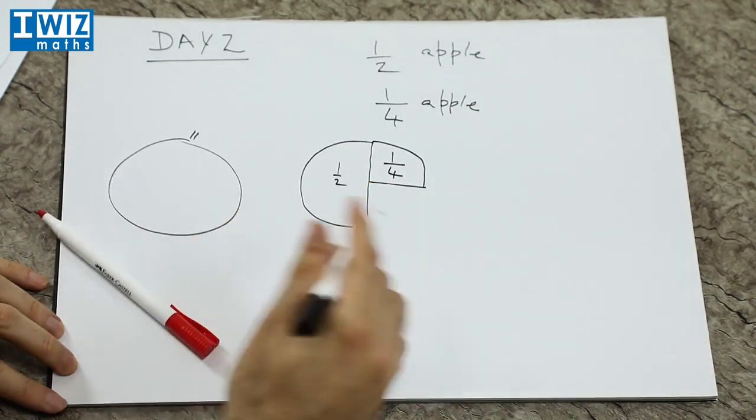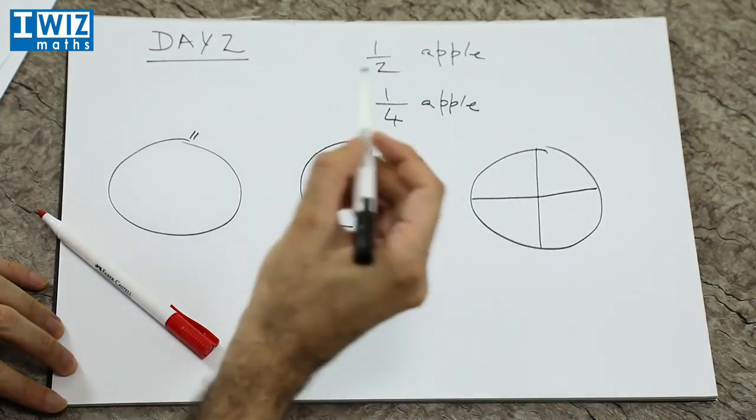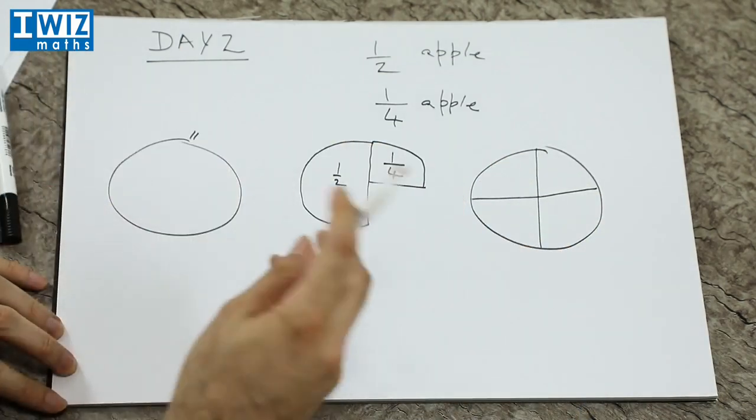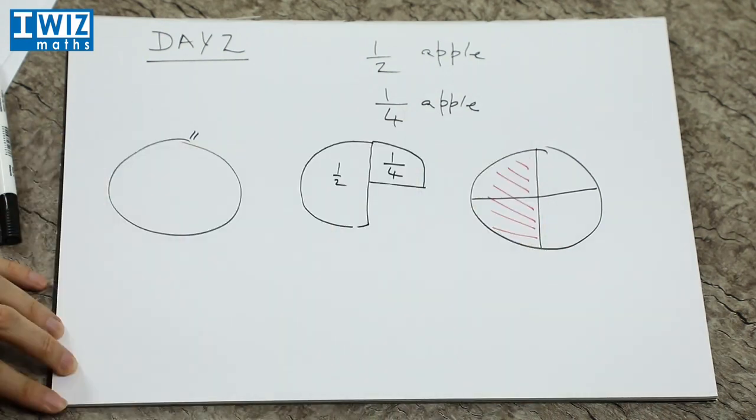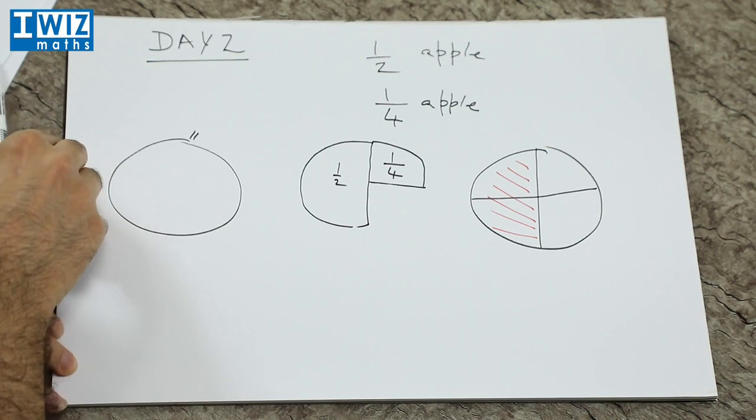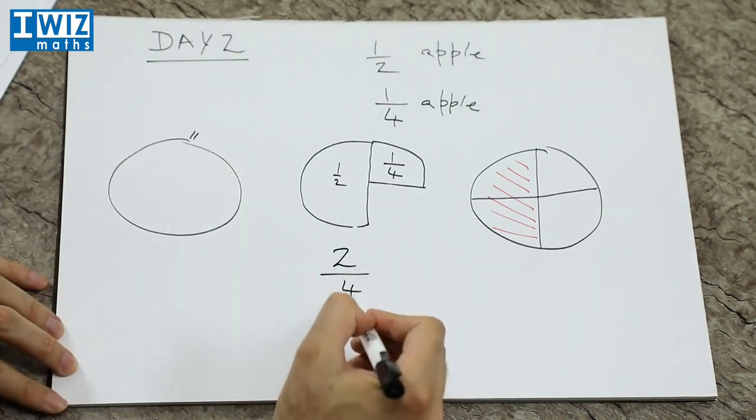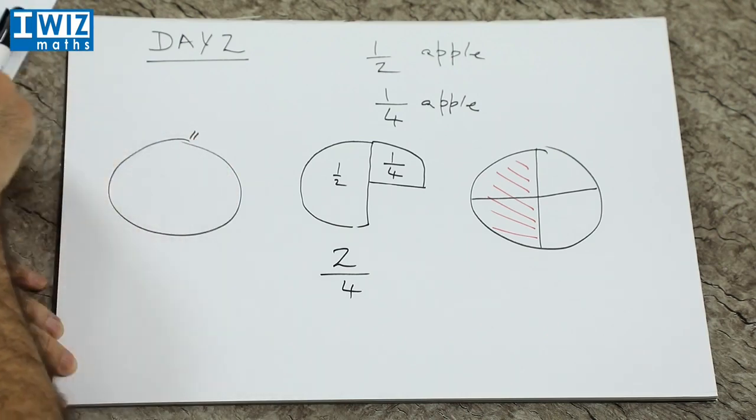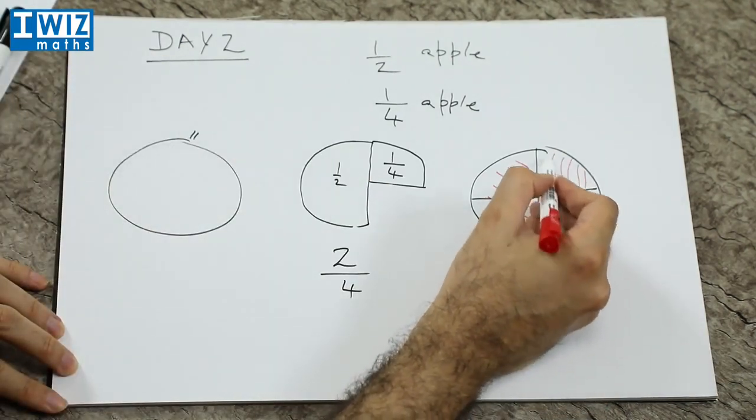Now if we actually just break it up into four pieces, then before lunch we've had two of the four pieces. So before lunch we ended up having two of the four pieces, and after lunch we had one of the four pieces. So we shaded that as well.